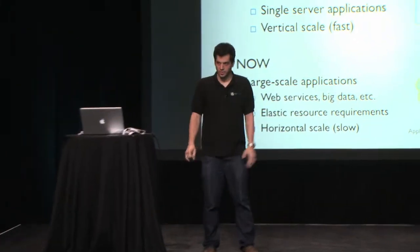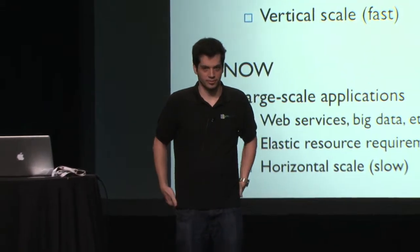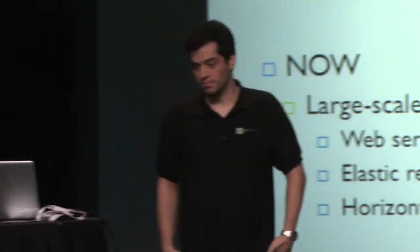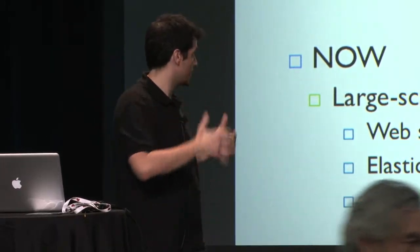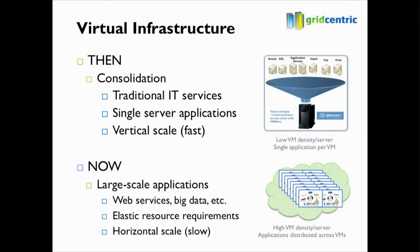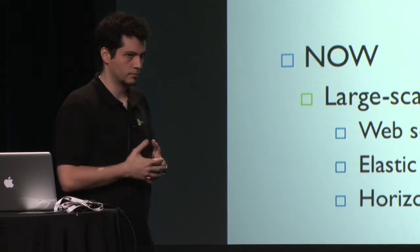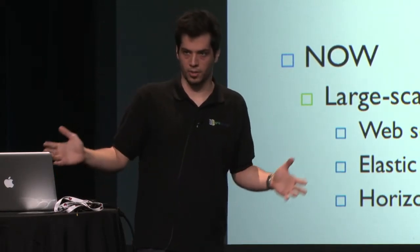The use cases for virtualization are changing. The classic use case is that you would take these single server applications, sort of vertically scaled applications, and consolidate them onto the next generation of hardware that's five times faster. But today, particularly with OpenStack, virtualization is being used to help deploy large scale, horizontally scalable applications.